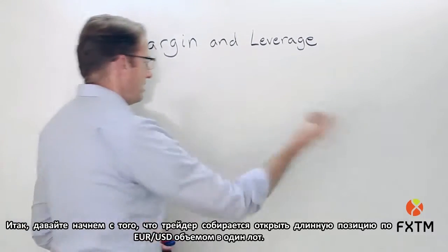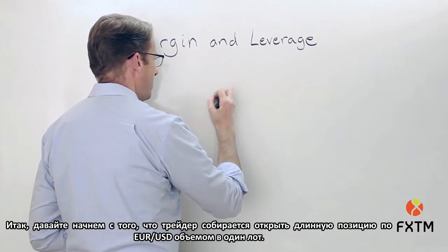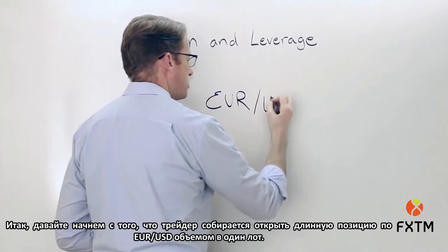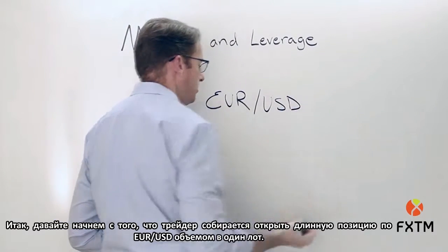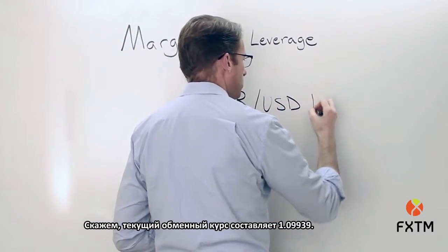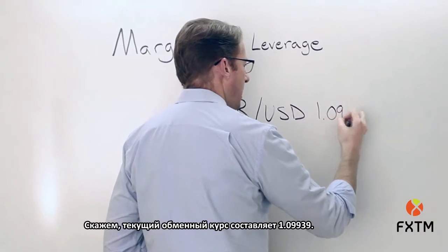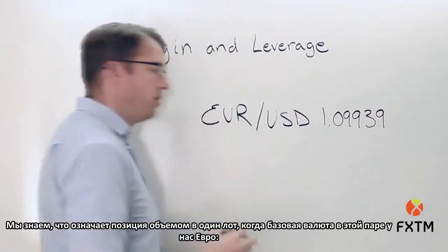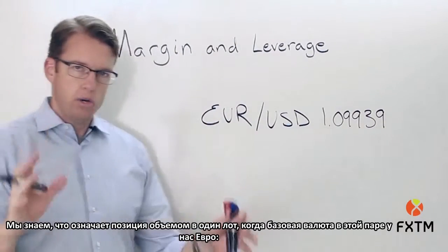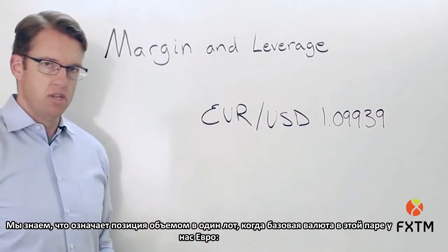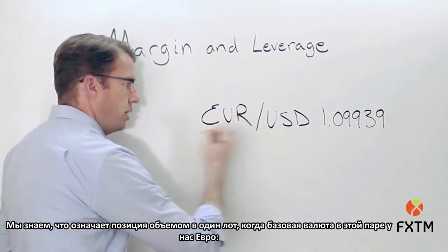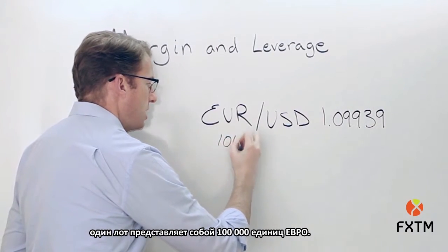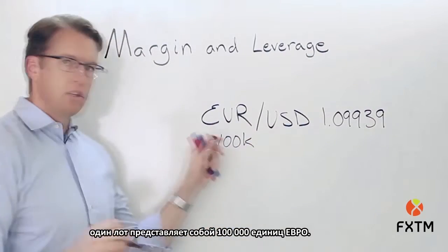Let's assume that a trader is looking at holding open a one-lot long position on the euro to the US dollar. Let's say that the current exchange rate is 1.09939. Now, a single-lot position means that because the euro is the base currency, this represents 100,000 units of the euro.